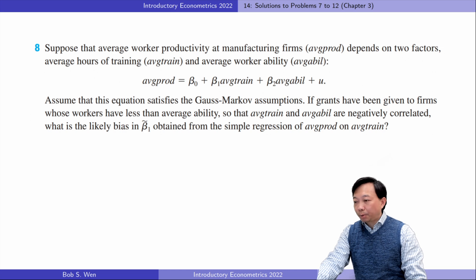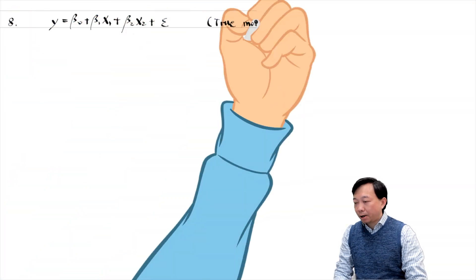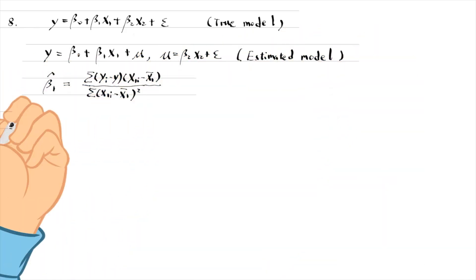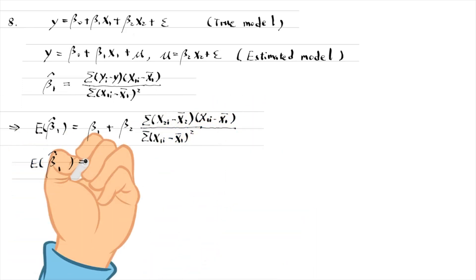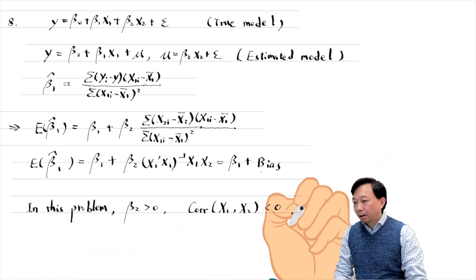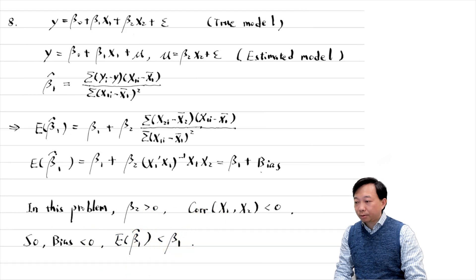For problem 8: we derived the omitted variable bias in video 10. The bias depends on beta 2 and the covariance or correlation between x1 and x2. In this problem, beta 2 is positive and the correlation between x1 and x2 is negative. So the bias is negative — it is a downward bias, meaning the training effect on productivity is underestimated.